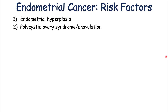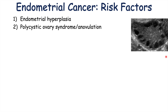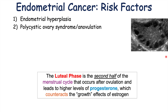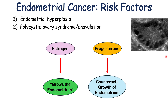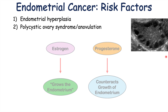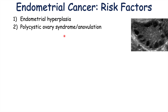Another risk factor is polycystic ovary syndrome or anovulation. In polycystic ovary syndrome and the condition of anovulation, there's not going to be ovulation — so no release of an egg. There's not going to be a transition into the luteal phase, so we're not going to get that progesterone. And that progesterone acts like the lawnmower — it helps to restrain and inhibit the growth of the endometrium. So because of that anovulation, we're not going to have that progesterone around.